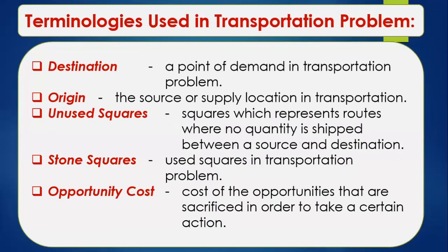There are different terminologies commonly used in transportation problems. First, we have destination, which refers to a point of demand. When we say origin, this is the source or supply location in transportation. We also have unused squares, which represent routes where no quantity is shipped between a source and destination. Stone squares are used squares in the transportation problem. Lastly, opportunity costs is the cost of the opportunities sacrificed in order to take certain courses of action.